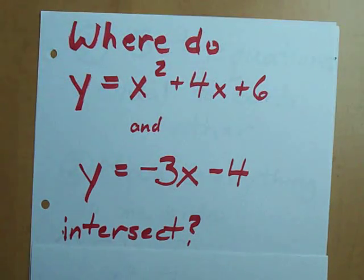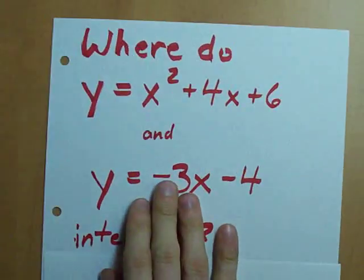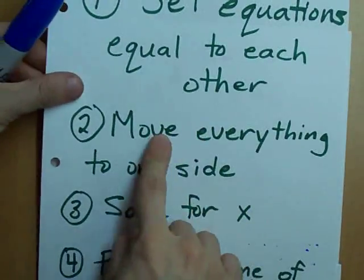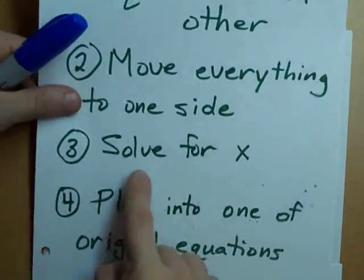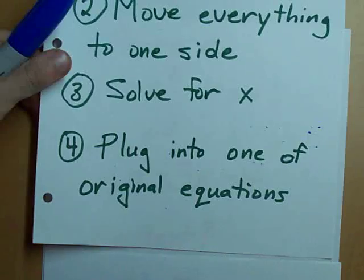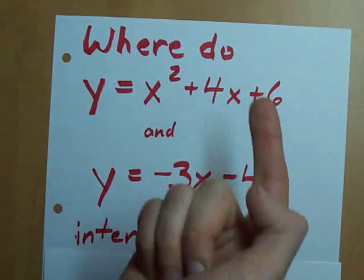Well, luckily for you, I've got a special four-step process for you. Here it is. Set the equations equal to each other, move everything to one side, solve for x, and then plug each x back into the original equation. Want to see it in action? I do. Let's do it.